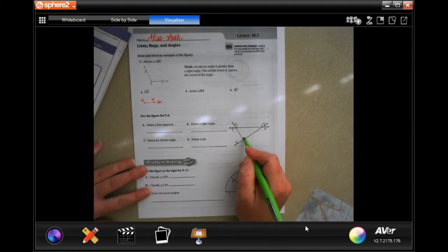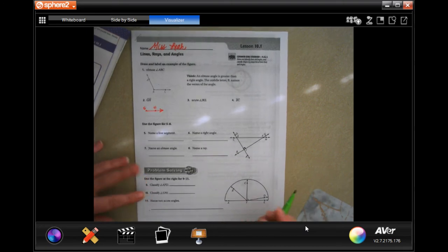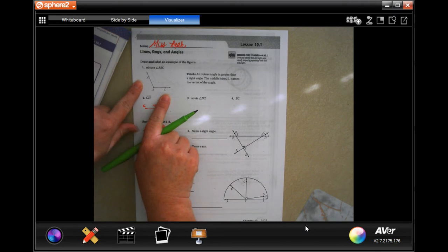When someone says acute, I always think of a kitten because it's so cute. When someone says obtuse, I think obnoxious, which is bigger and louder and grander than necessary.